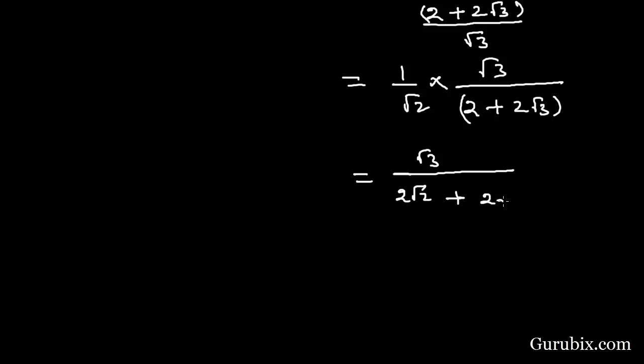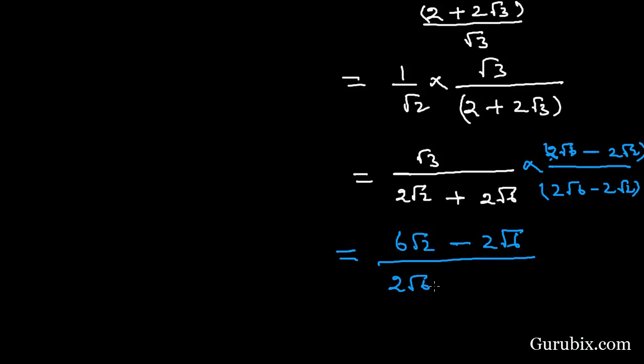We shall rationalize it by multiplying by 2 root 6 minus 2 root 2 over 2 root 6 minus 2 root 2. The numerator becomes 6 root 2 minus 2 root 6, and the denominator becomes 2 root 6 square minus 2 root 2 square.